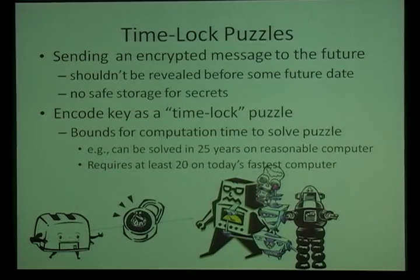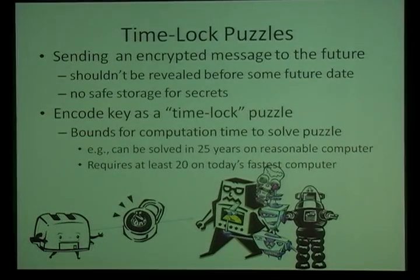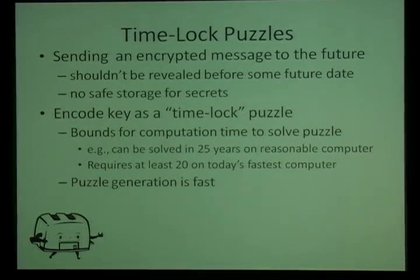The idea is that a Time-Lock Puzzle is a puzzle where we can bound the computation in both directions. On the one hand, it should be feasible to solve — say, in 25 years, or some reasonable time after the robot uprising, the robot should be able to discover that the toaster was there. On the other hand, it should take at least that long — at least 20 years — to solve it with the fastest computers today, so that the humans won't be able to solve it. And that's not quite enough, because we also want puzzle generation to be much, much faster than puzzle solution.